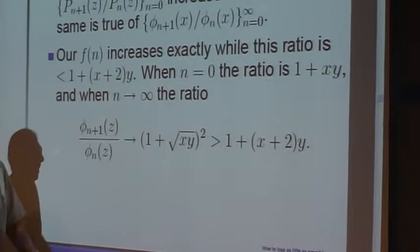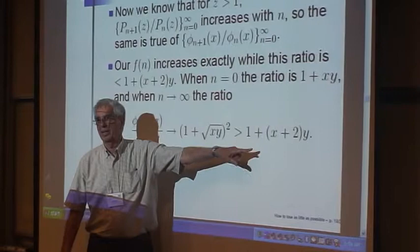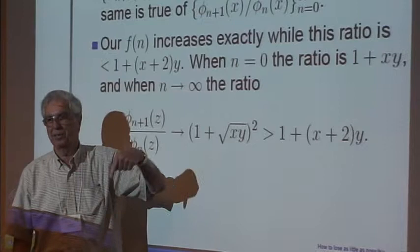When phi n plus 1 over phi n passes through this value is where n is determined. So we're saying that infinity is bigger than that, and at 0 is less than that, and it's monotone in between. So it will pass the result once.